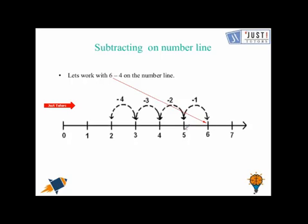On the first jump, we move to the number 5. Second jump, at the number 4. Third jump, at the number 3. Fourth jump, at the number 2, which is our answer. So 6 take away 4 equals 2. And this is how we show it on the number line.